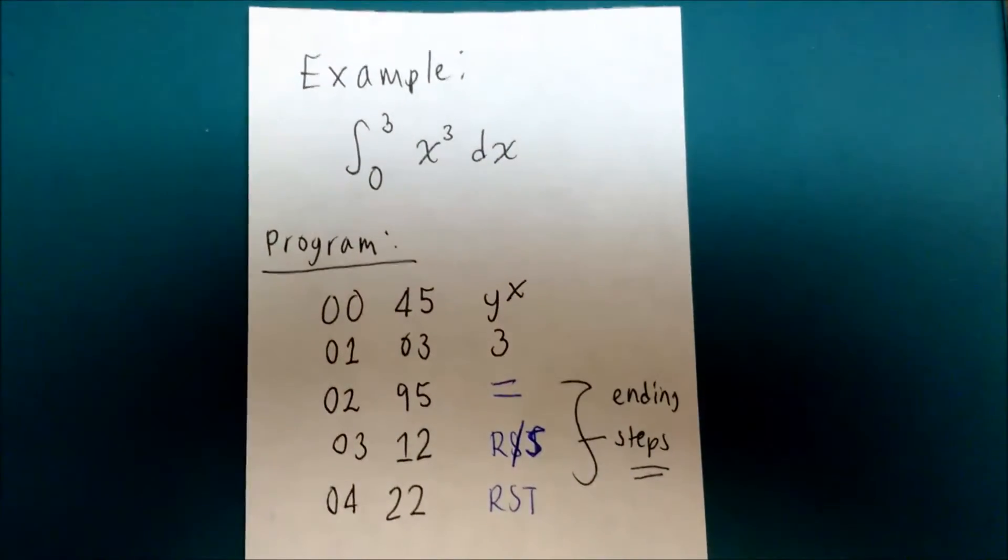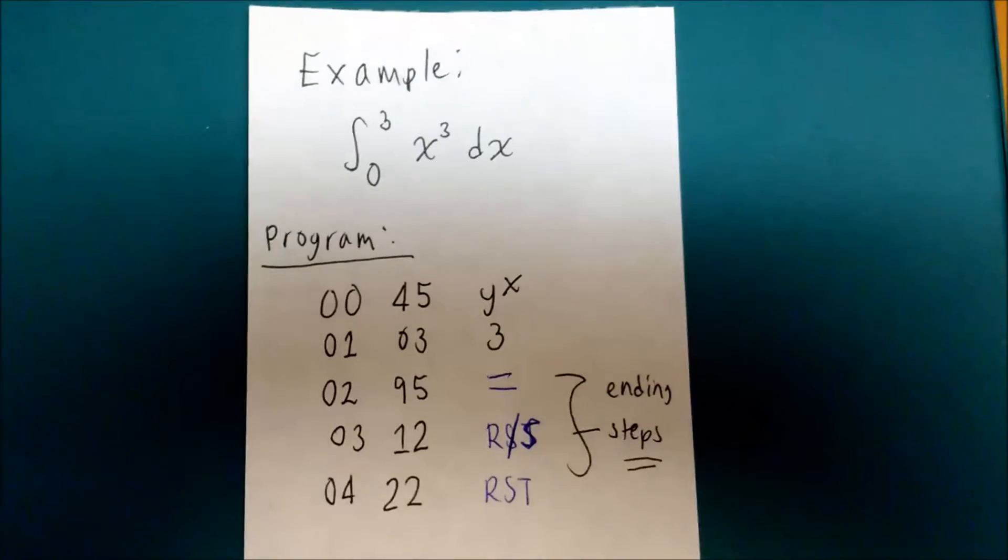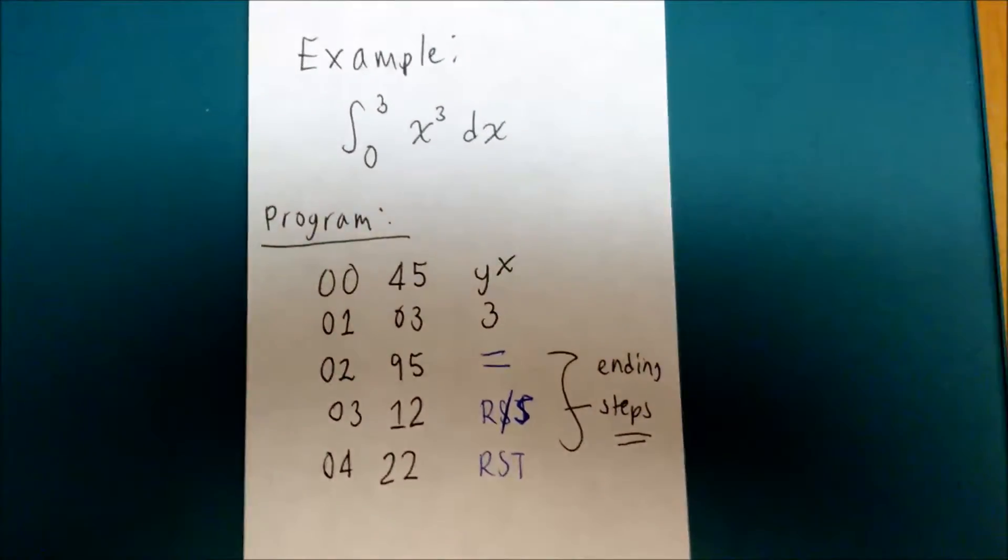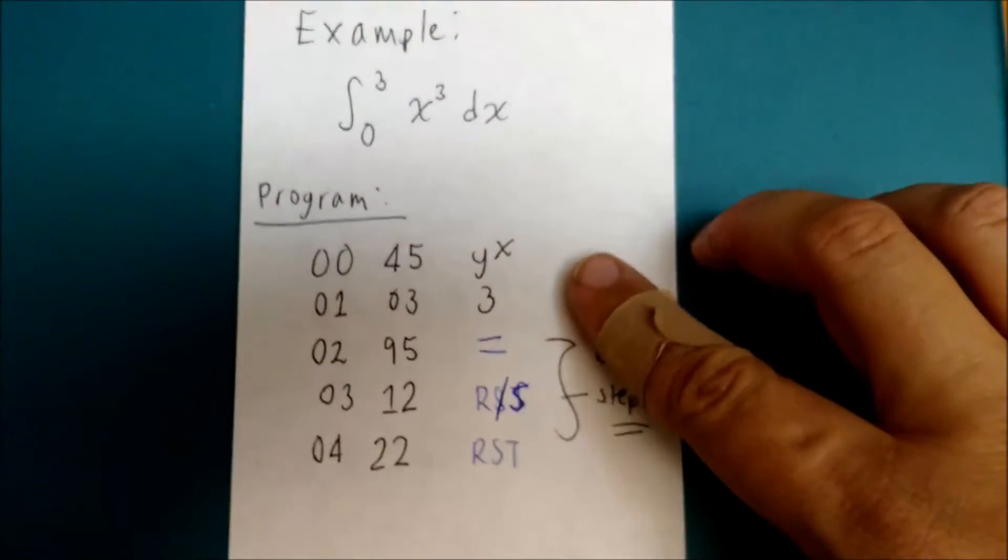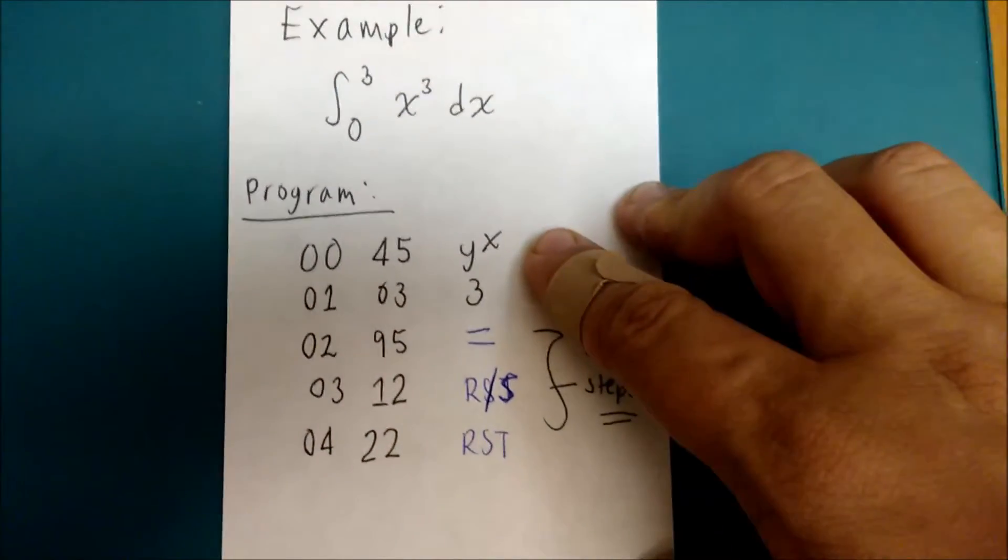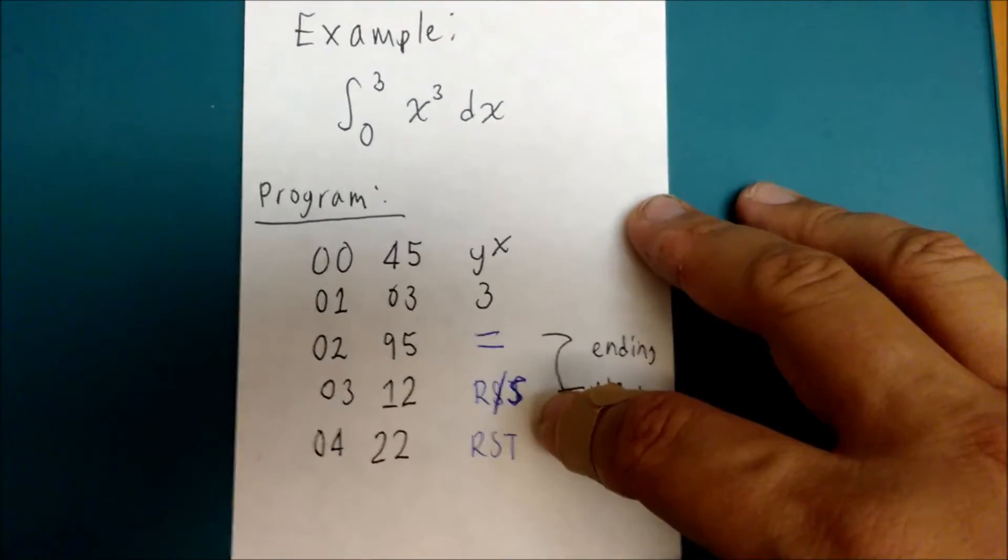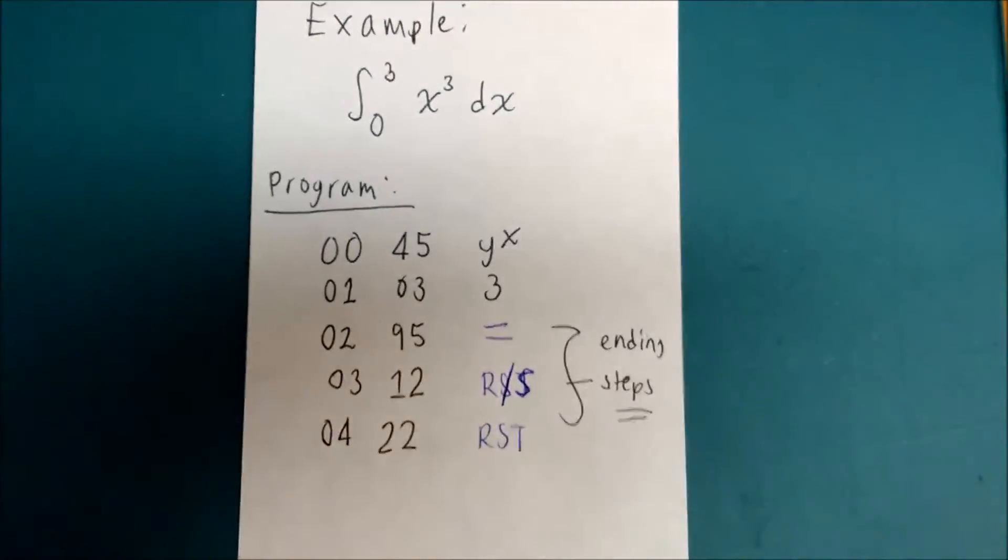Going back to my example of the integral of x cubed from 0 to 3, this is the part we're going to type: the power 3, equals, run-stop, reset.